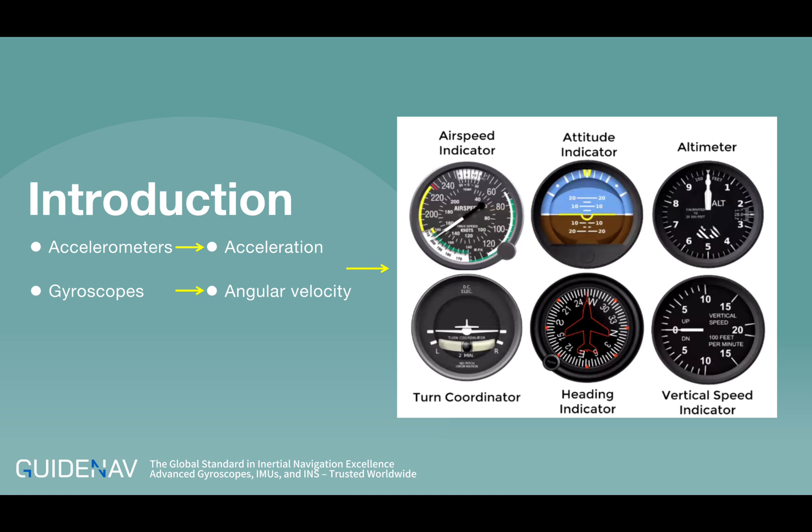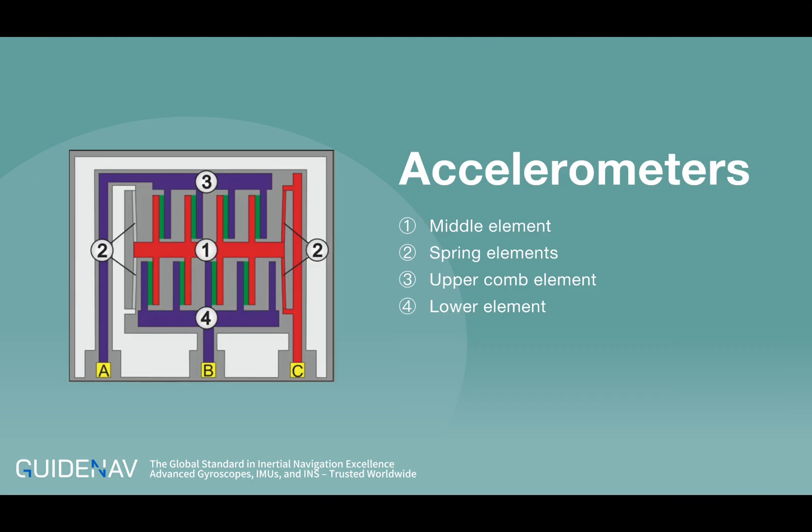It uses them to calculate the attitude information of the carrier. In an accelerometer, the middle element one is a movably mounted mass held in the middle position by spring element two.